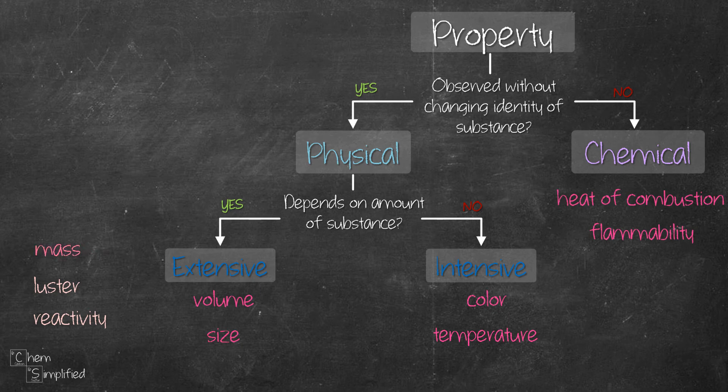Mass of a substance can be measured without making any change to the substance, therefore it's a physical property. Now if we measure the mass of a substance in a container and then split it in half, the mass of half the substance will be divided by two as well. That means mass is dependent on the amount of substance, making it an extensive property.